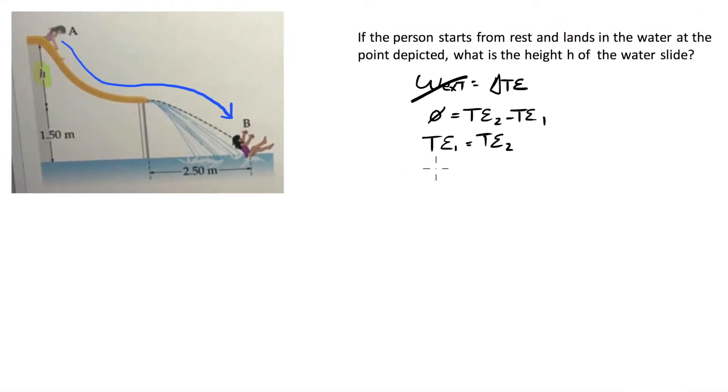Energy 1 is going to be made up of potential energy 1 and kinetic energy 1. Likewise for total energy 2. So let's think about solving this problem. We are interested in figuring out the height here, which means we might want to think about the energy or the potential energy at part A because potential energy is going to be mgh.